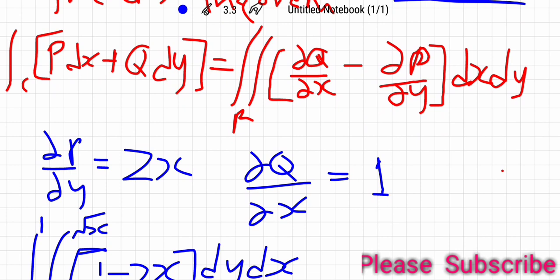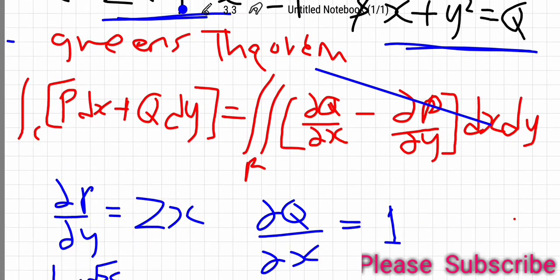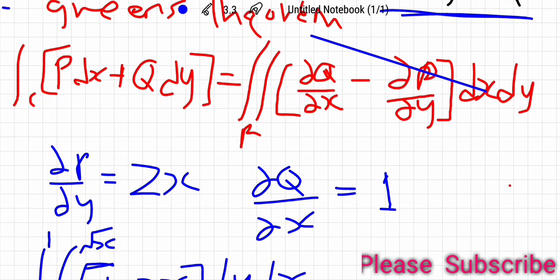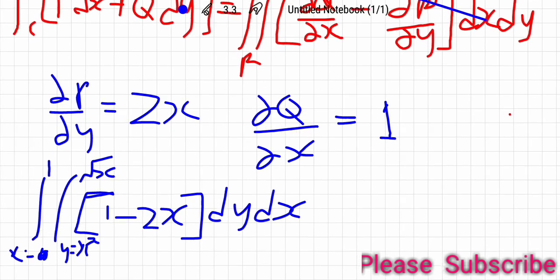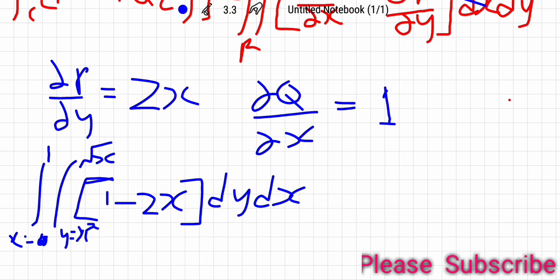The first step is to find the partial derivative of P with respect to y. Since x squared is a constant when differentiating with respect to y, the partial derivative of P with respect to y is 2x. The partial derivative of Q with respect to x is equal to 1.